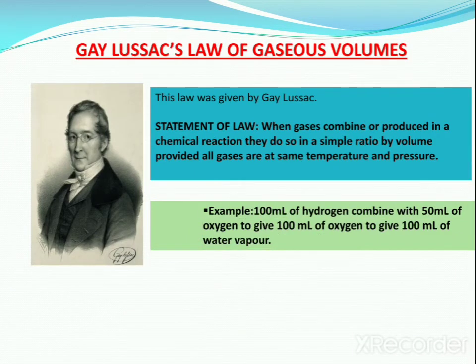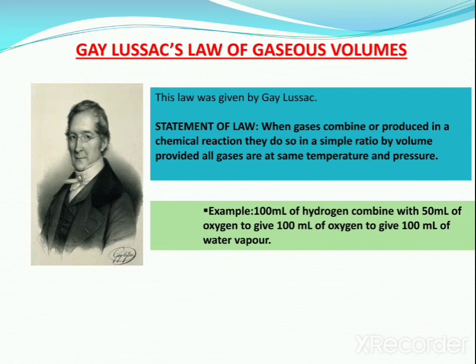The next law is Gay-Lussac's law of gaseous volumes. This law was given by Gay-Lussac. The statement of the law is: when gases combine or are produced in a chemical reaction, they do so in a simple ratio by volume, provided all gases are at the same temperature and pressure. For example, 100 ml of hydrogen combines with 50 ml of oxygen to give 100 ml of water vapor.